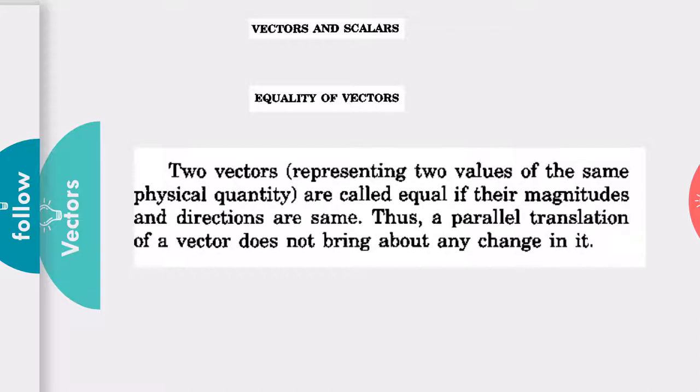as well as their direction should be the same. Not only the magnitude—we need to keep the direction also the same. Thus, a parallel translation of a vector does not bring about any change in it. This means that if we are translating a vector, it doesn't mean the vectors are different, because their direction still remains the same and they have the same magnitude.